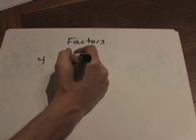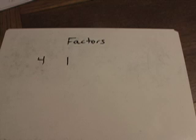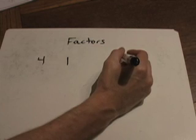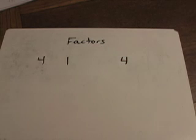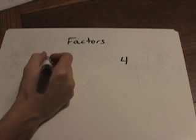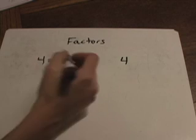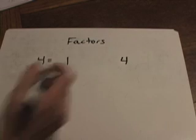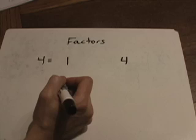To determine that, what I want you to do is write down the number 1 because 1 is going to go into every number. And then the number that you're trying to find the factors of goes out here towards the right. The factors of 4. The first two we have are 1 and 4 because 1 times 4 is 4.